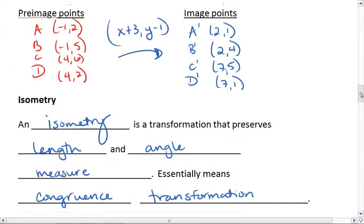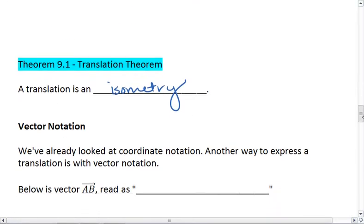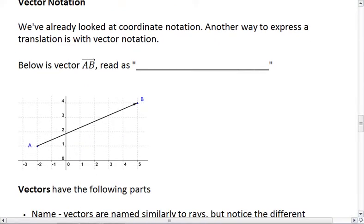Now that we've talked about coordinate notation, as well as what an isometry is, let's look at vector notation.